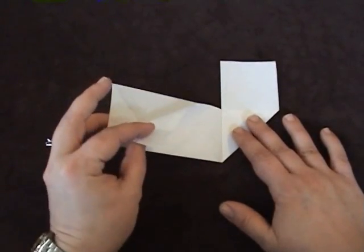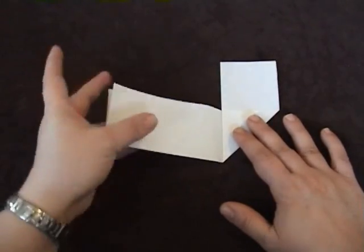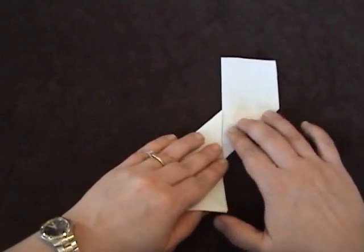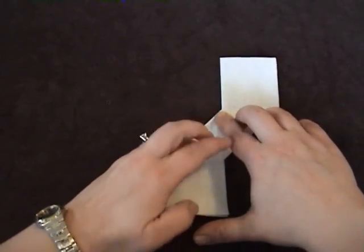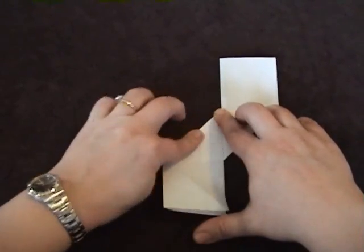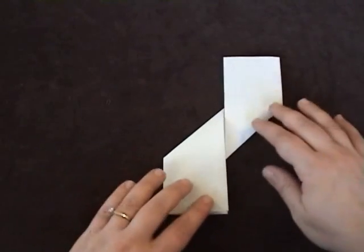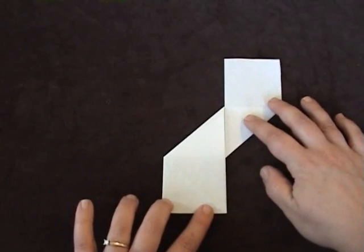Now, the opposite side needs to go the opposite direction. So we're going to fold that one down right along our crease. So now we have something that looks like that.